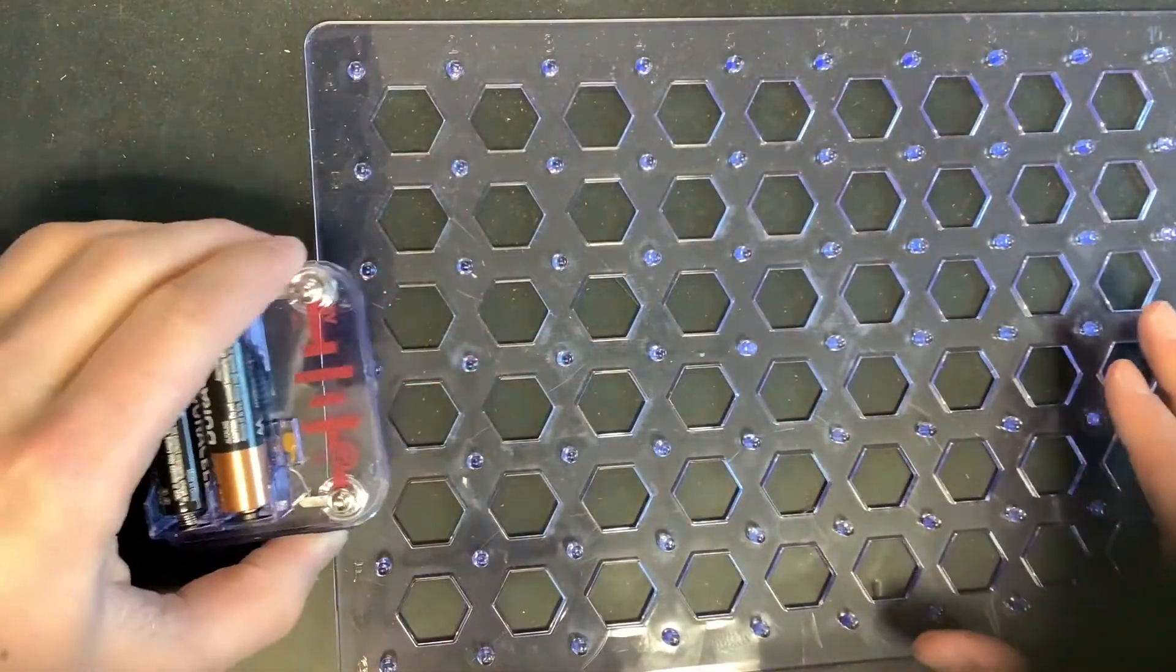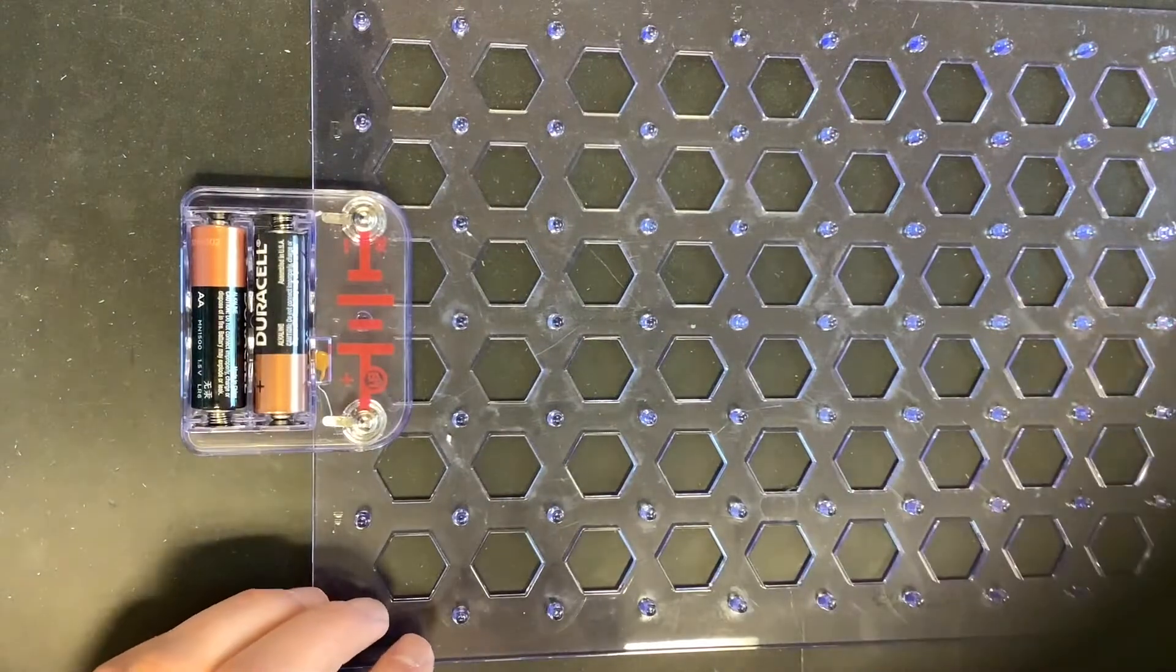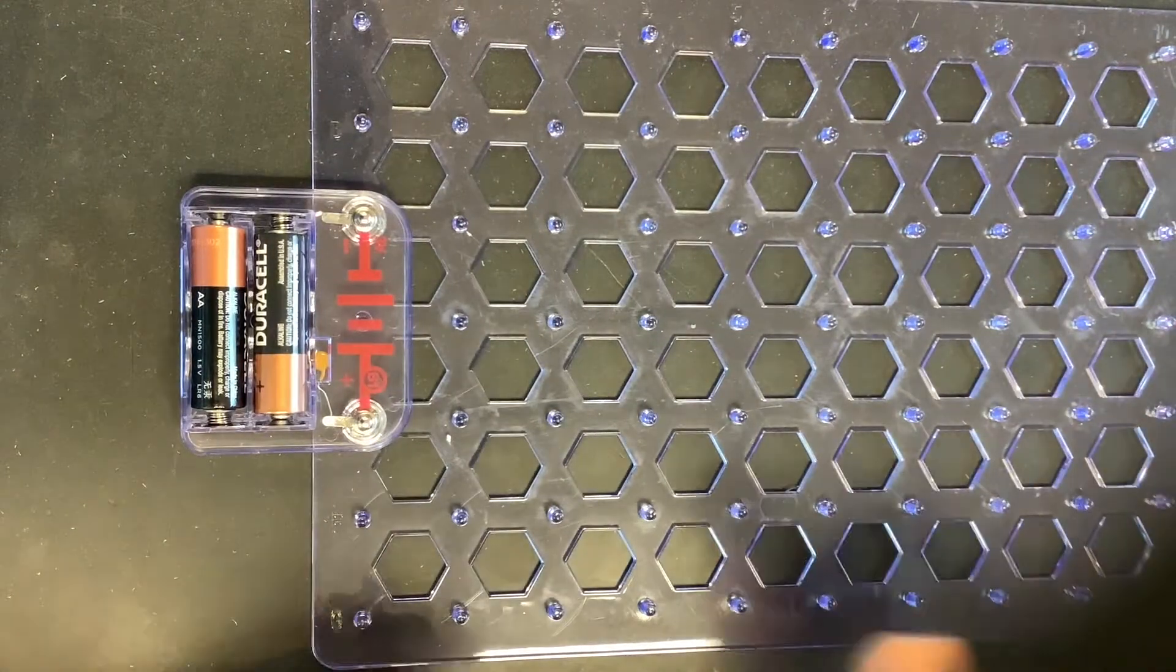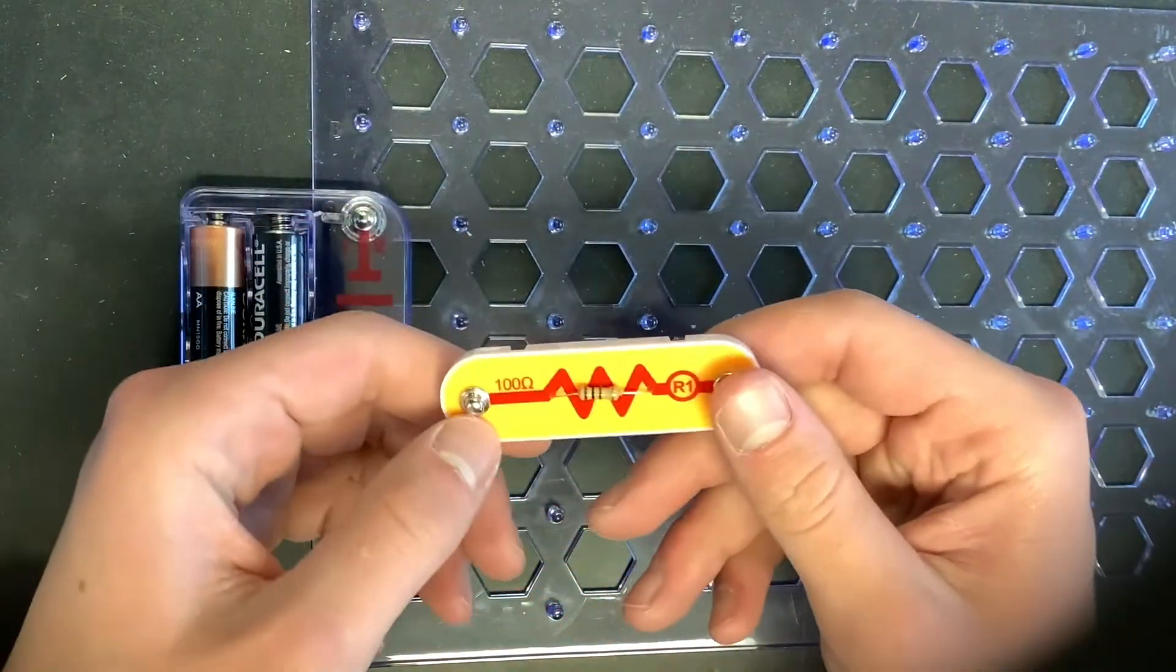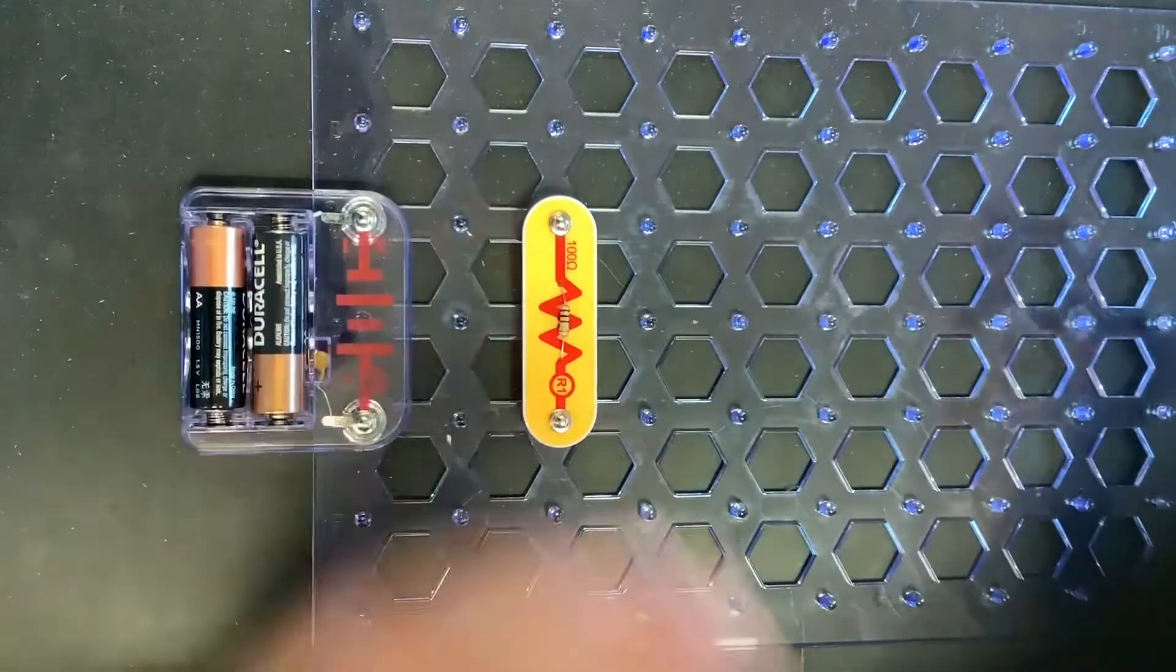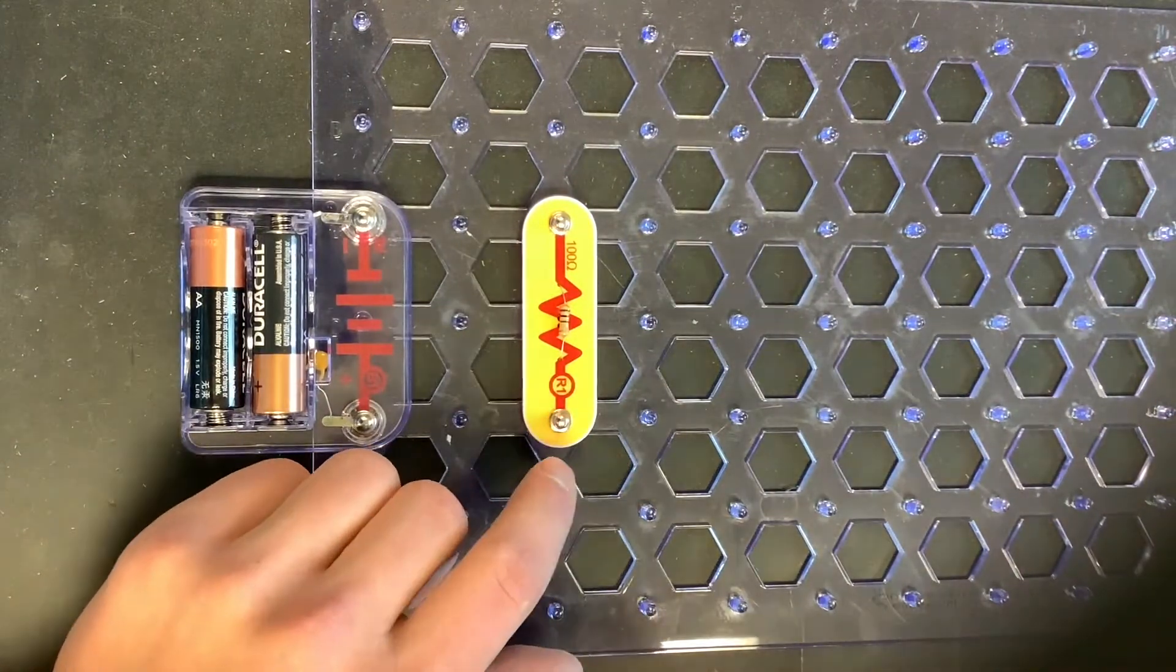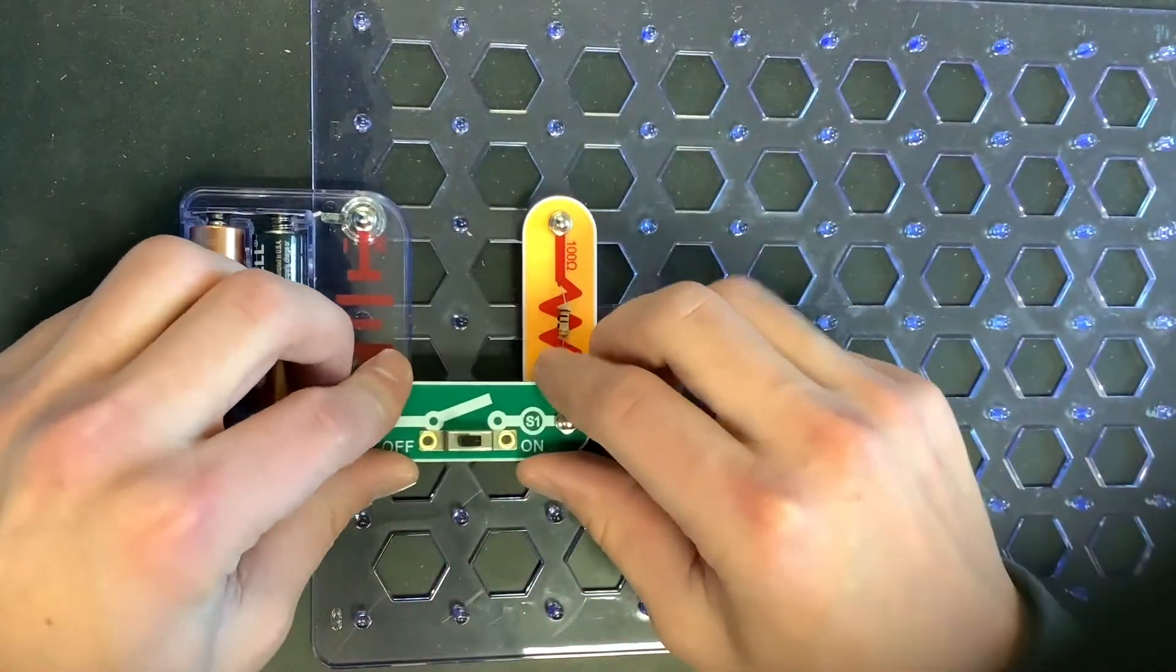So the next thing that we're going to do is we're going to build that same circuit that we had last time. But instead of a connector, we're going to use this 100-ohm resistor. And a resistor resists current, hence the name resistor. And we're going to put that where the connector was last time.